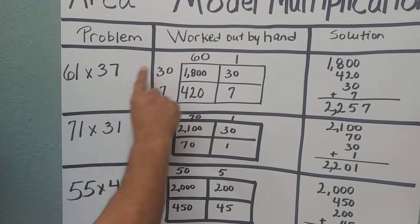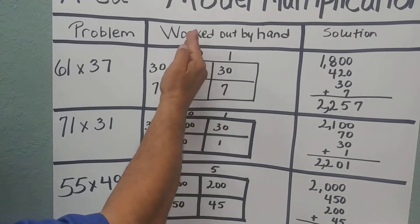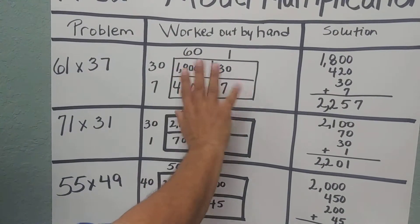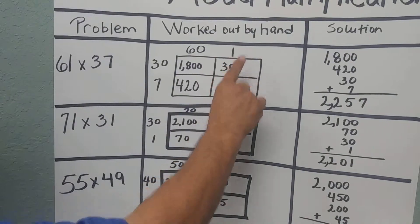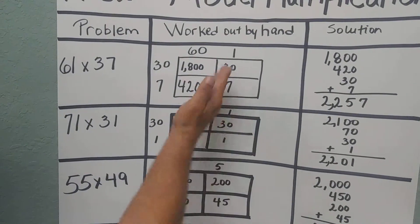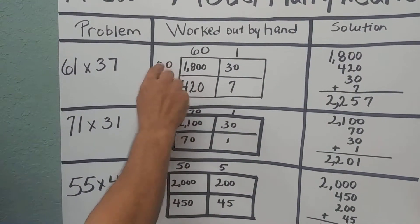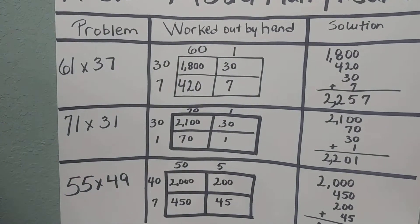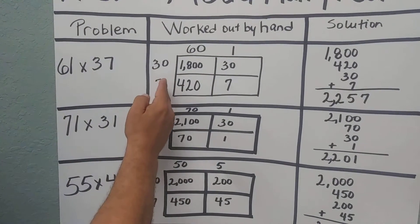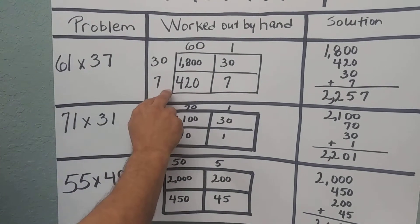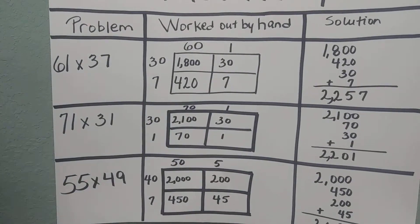We're going to take 61 and add 60 in the tens place in our box in this column, and then the 1 over in the ones place. On the left-hand side, the top number is going to be the tens spot, and then 7 for 37 is going to be in the ones place.